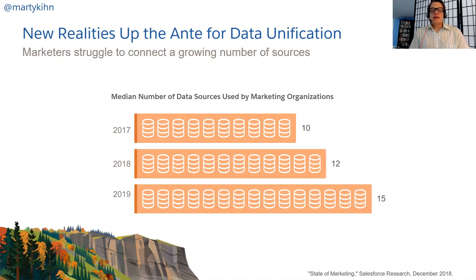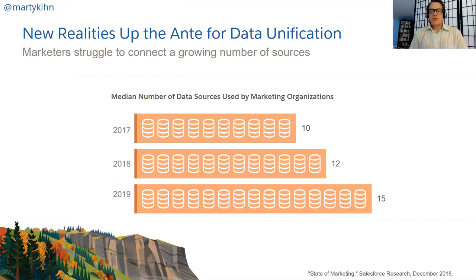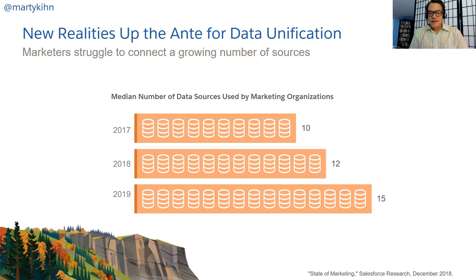The number of data sources is exploding. The median number of significant data sources — and if you ask a company like Unilever or P&G how many applications they're using in marketing, counting every application across all brands, it's definitely in the hundreds; Unilever is probably over 400. Significant internal or external data sources housing customer data have been going up about 25% a year. If you project this compound annual growth out 10 years, we're talking about 140 sources.